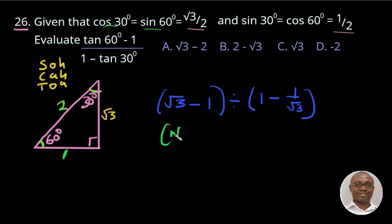Let us simplify further. So we have √3 minus 1 divide. Let us work on this bracket. We need to find the LCM of these two fractions.